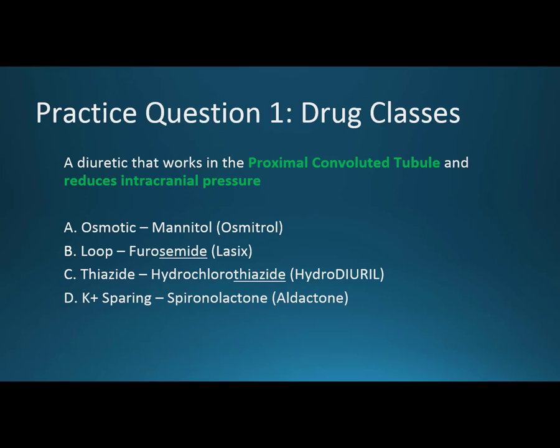Practice question: A diuretic that works in the proximal convoluted tubule and reduces intracranial pressure — is it: A, osmotic diuretic mannitol, brand Osmotrol; B, loop diuretic furosemide, brand Lasix; C, thiazide diuretic hydrochlorothiazide, brand Hydradiaril; or D, potassium-sparing diuretic spironolactone, brand Aldactone?